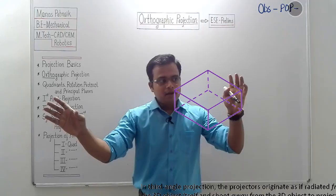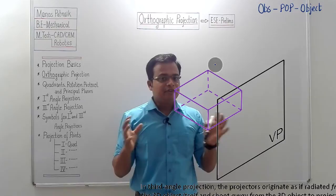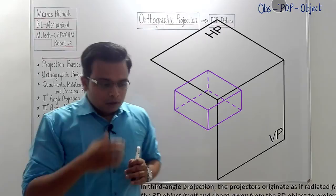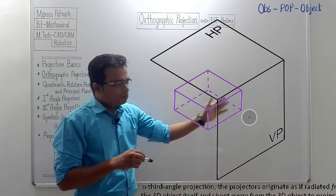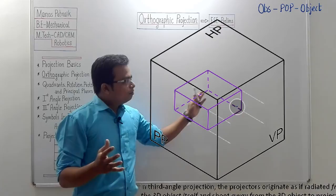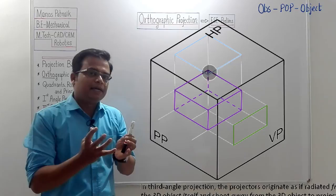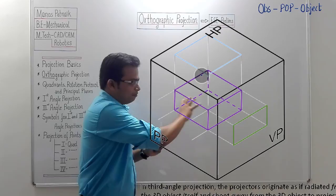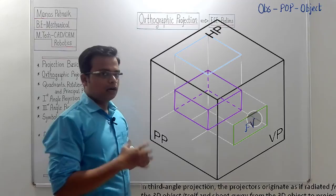In third angle projection, the plane of projection comes between the observer and the object, so we need to make the plane of projection transparent. The object is below HP and behind VP. When trying to view from the front or from the top, you can't see it — so both HP and VP must be made transparent. The front view is a rectangle, and the top view is also a rectangle.